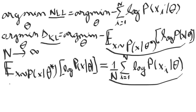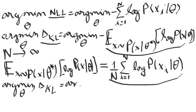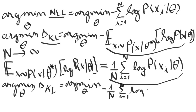By replacing the expected value inside the KL divergence minimization equation with this approximation, we obtain: argmin over theta of the KL divergence equals argmin over theta of minus 1 over n times the sum from i equals 1 to n of the logarithm of p of xi given theta.